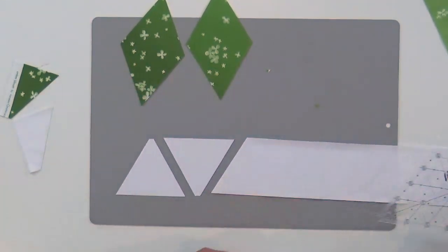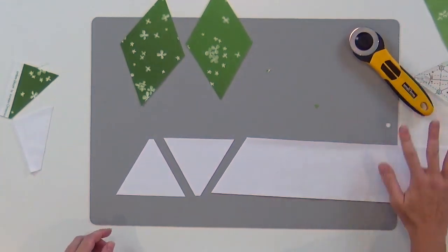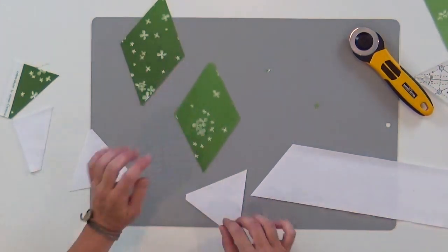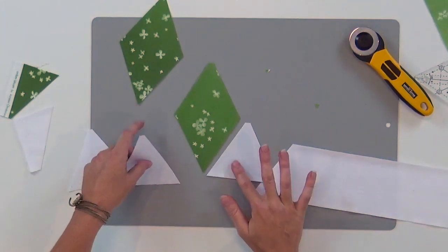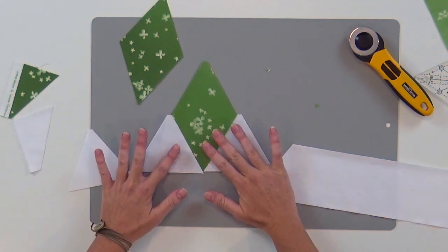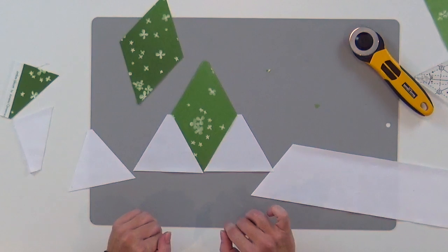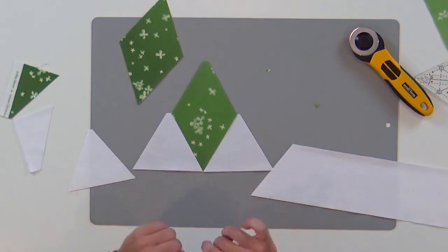I'm going to trim. So here I have a leaf and two triangles, and that creates a larger triangle unit or a leaf block.